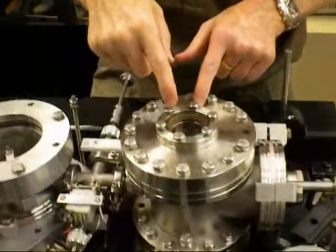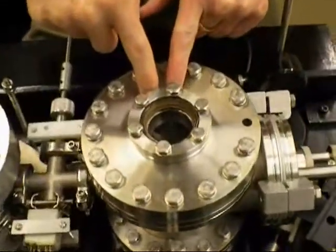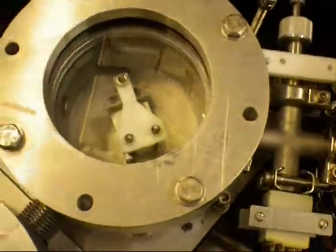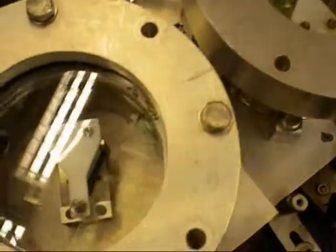So this is, as I said, the output coupler is just in there. These are the tuning prisms, and you may be able to see the light from the pump laser, that green light on there.